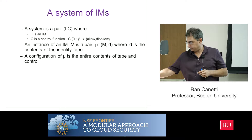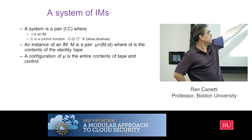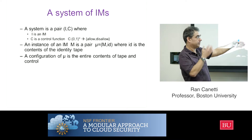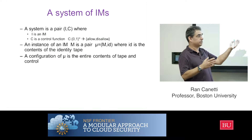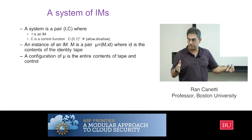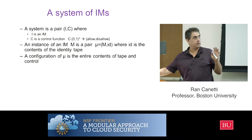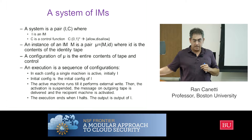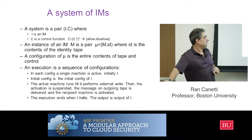I want to distinguish. A configuration of a machine, or for an instance, is the usual configuration. We think of the configuration of some computing device — it's the entire contents of the tape and the control, whatever information you need in order to restart the computation from where you are right now. And then an execution of such a system is a sequence of configurations.